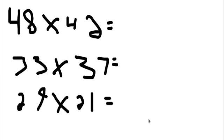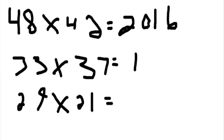First I'm going to solve these problems, then I'll show you exactly how I did them. So first, 48 times 42 equals 2016. 33 times 37 equals 1221. And 29 times 21 equals 609.